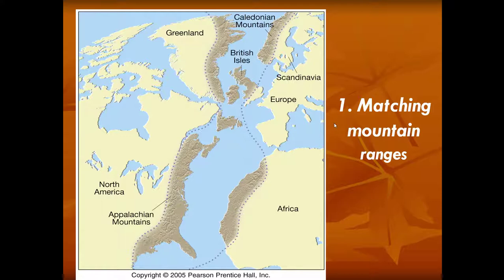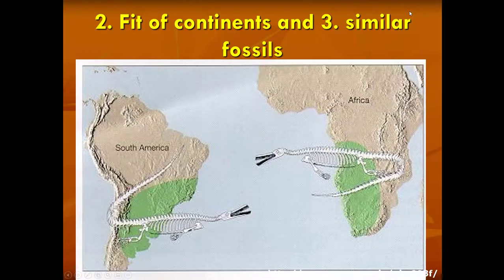Wegener said: how would you just get mountains on either side of the Atlantic Ocean that formed at the same time in the same rock type? Isn't it more logical to say they were one continuous chain of mountains pulled apart by continents drifting into their current positions? The second and third lines of evidence are related to the fit of the continents — it looks like they would fit together, especially South America and Africa. But it's not enough to say they look like they fit, so Wegener went and found fossils on either side of the Atlantic Ocean.